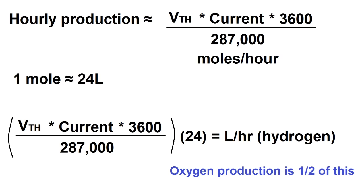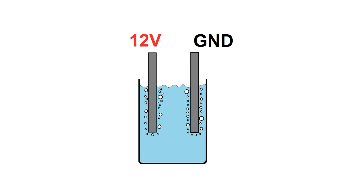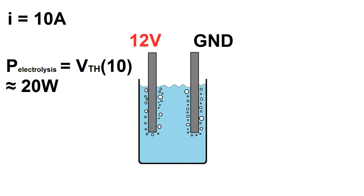If you're building a cell, you may be tempted to just crank up the voltage to increase the current, and this would certainly increase the gas output. Problem is, it's also reducing the efficiency of the cell and dramatically increasing heating. If you had 12 volts and 10 amps going into a cell, 10 times threshold voltage, or about 20 watts, would be going into electrolysis, and the remaining 100 watts would be going toward heat.